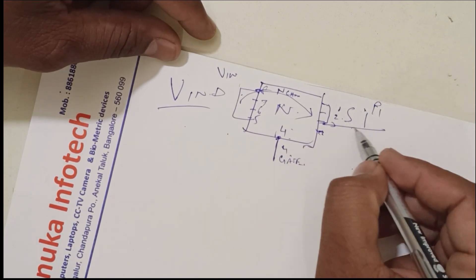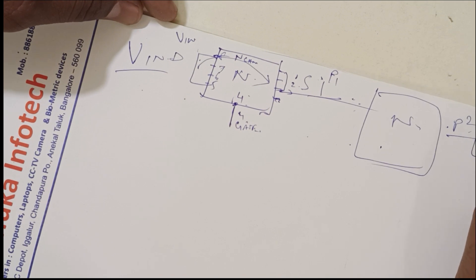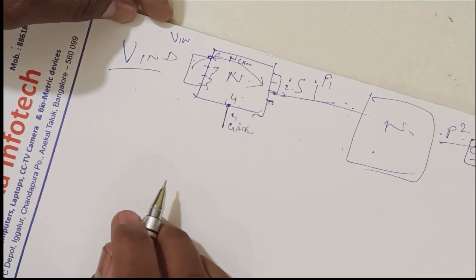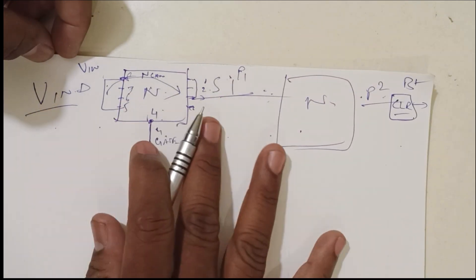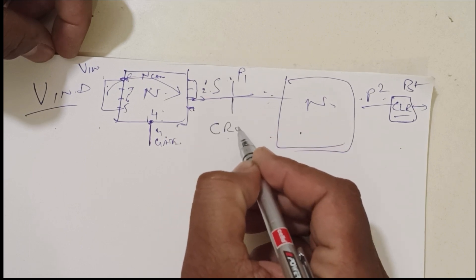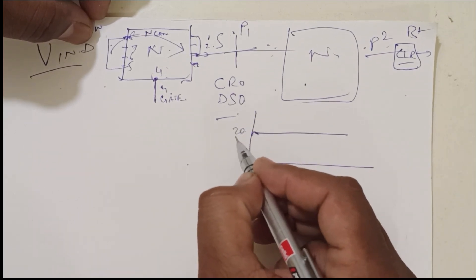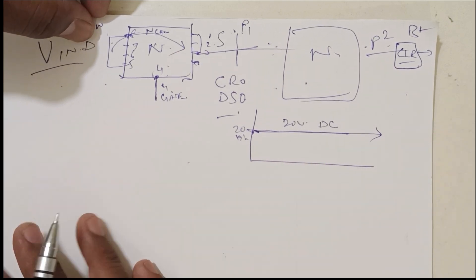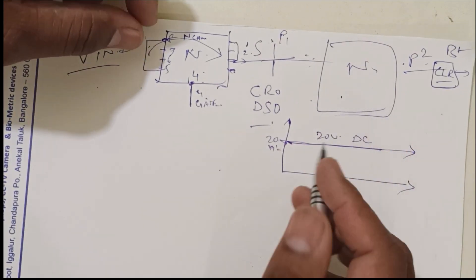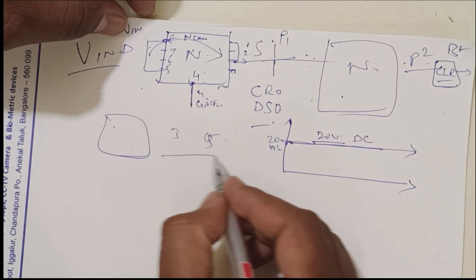The V-in will pass through this channel and become P2 or P1. Again, one more N-channel is there — it passes through and becomes P2, and then through the coil it becomes B-plus. In a CRO or DSO you will get direct current — 20V DC. Now, how does this 20V DC allow a particular coil to generate 3 volts, 5 volts, or any other voltage?